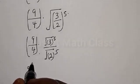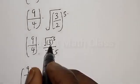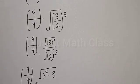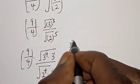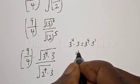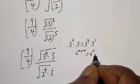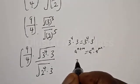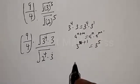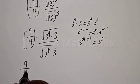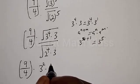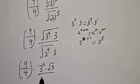So we have 9 over 4 multiplied by root 3 raised to the power 5 over root 2 raised to the power 5. Now, root 3 raised to the power 5 can be written as root 3 raised to the power 4 multiplied by root 3. Using the rule a^n · a^m = a^(n+m), root 3 to the power 4 times root 3 to the power 1 equals root 3 to the power 5. Therefore we have 9 over 4 multiplied by 3 squared over 2 squared, multiplied by root 3 over root 2.